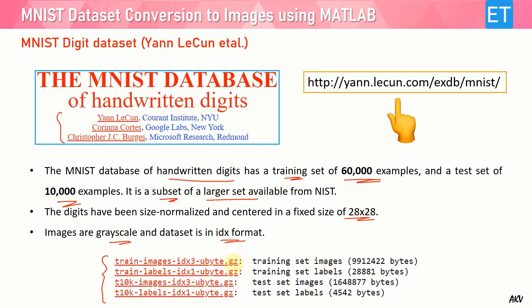The dataset is in IDX ubyte format. When you go to this website you will see four files — these are compressed .gz files. You can uncompress them using software such as WinRAR. When you uncompress, you get a file called train-images.idx-ubyte, but you cannot open it — you won't be able to see any images in this file. You have to write code to read it. This is a really complex package, which is why I'm presenting this work so you can get these images in JPEG and PNG format.